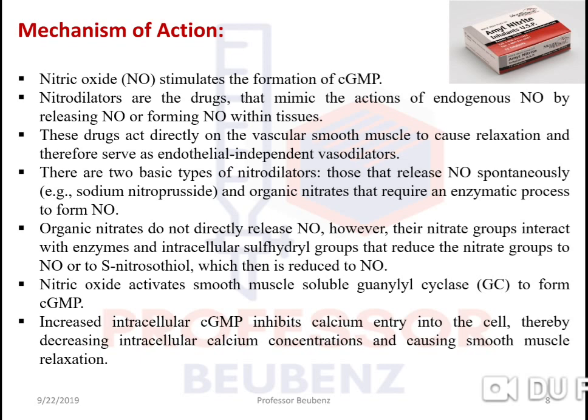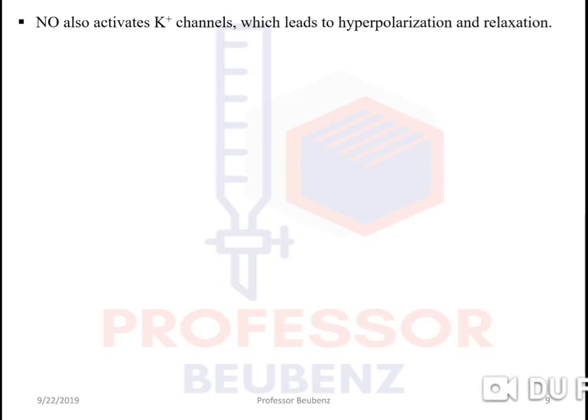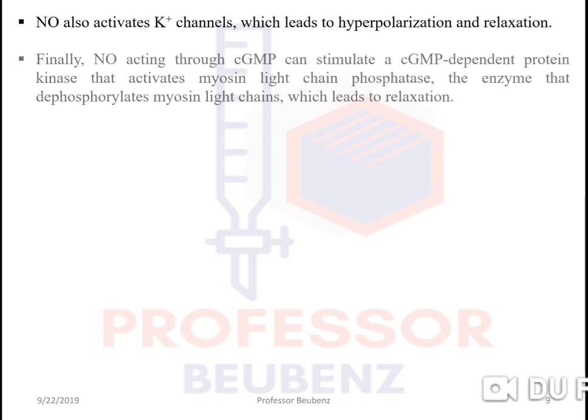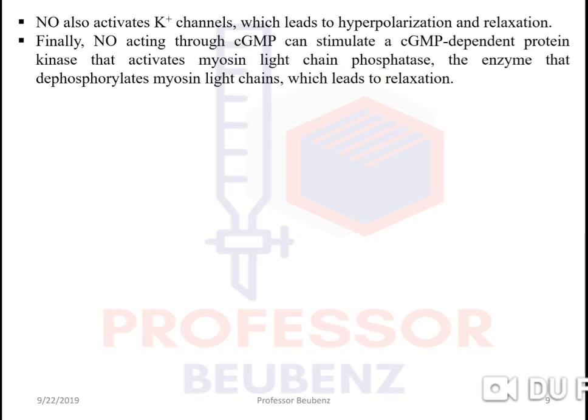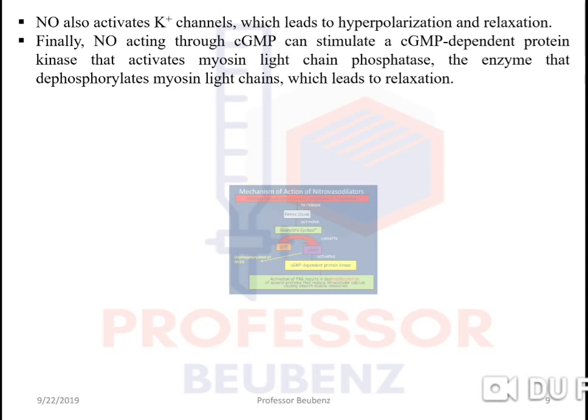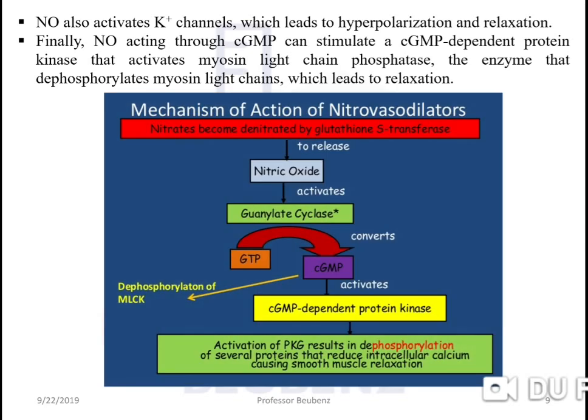Nitric oxide activates smooth muscle soluble guanylyl cyclase to form cGMP. Increased intracellular cGMP inhibits calcium entry into the cell, thereby decreasing intracellular calcium concentration and causing smooth muscle relaxation. Nitric oxide also activates potassium channels, leading to hyperpolarization and relaxation. Finally, nitric oxide acting through cGMP can stimulate a cGMP-dependent protein kinase that activates myosin light chain phosphatase — the enzyme that dephosphorylates myosin light chain — which leads to relaxation.